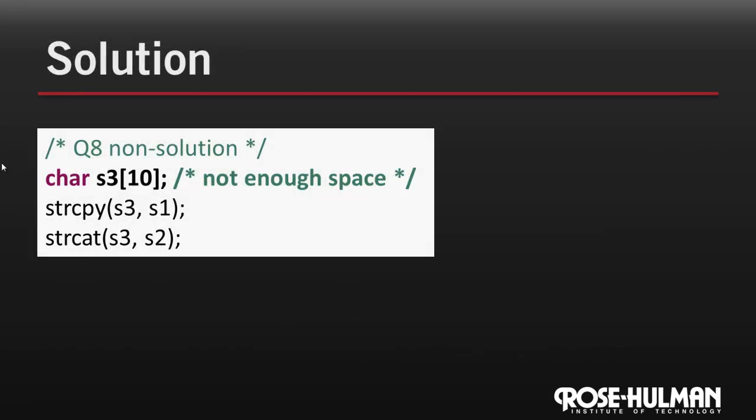Let's see how you did. Let's take a look at something that actually wouldn't work the first time. What if we declared s3 to only have ten characters of space? Remember that that would break things, because ten characters isn't enough to hold both s1 and s2. So chances are you'd be overwriting something else in memory.